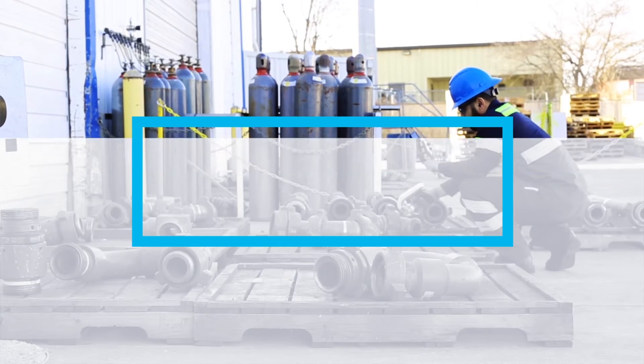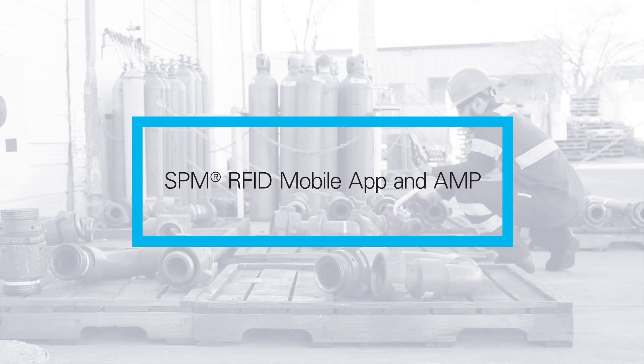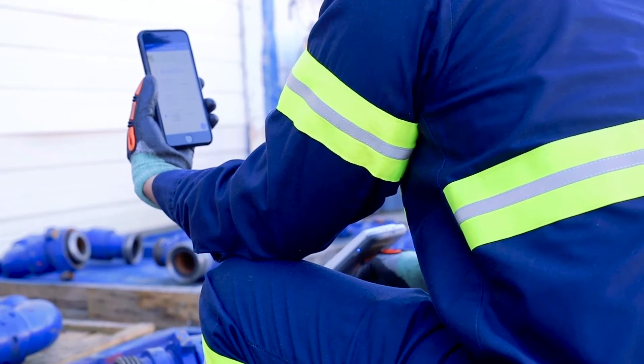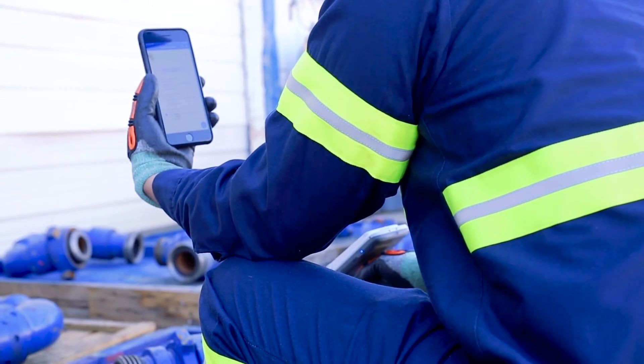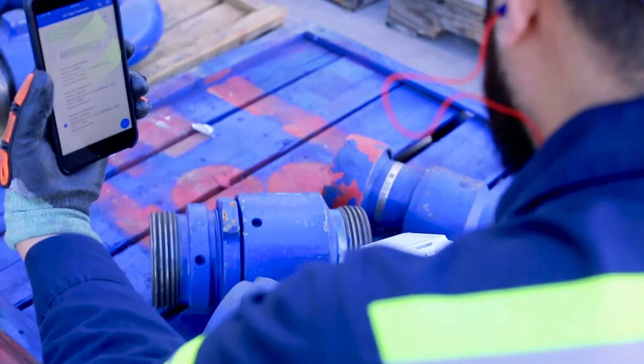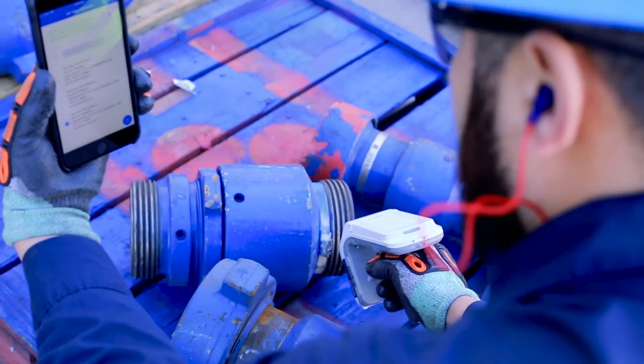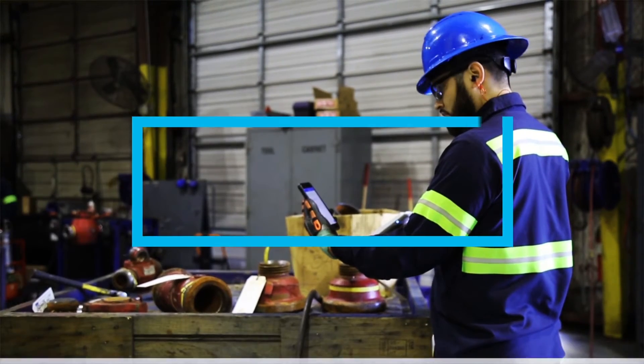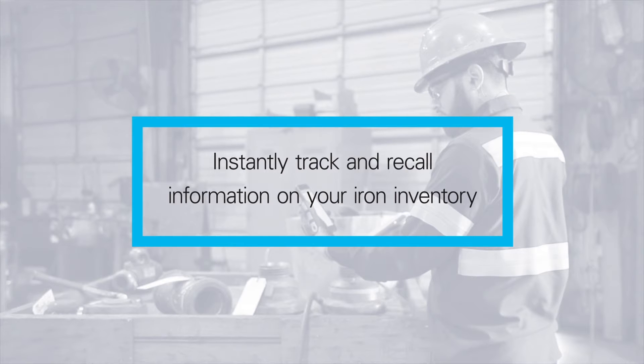When it comes to asset management, innovation is long overdue. Advancing technology with a vengeance, SPM Oil and Gas introduces radio frequency identification technology, mobile app, and asset management program. With this system, companies can instantly track and recall information on any piece of iron in their inventory.